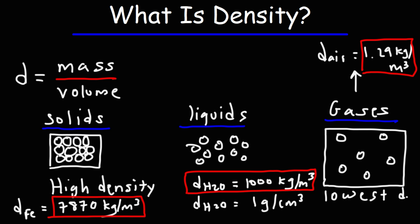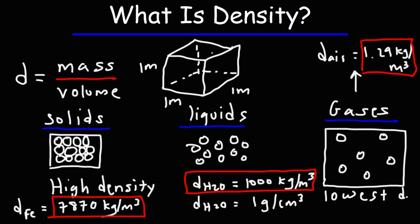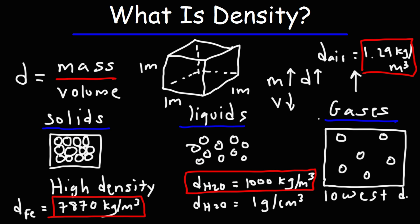So let's think about what this means. If we have a cube that is 1 meter across all sides, it's going to have a volume of 1 cubic meter. If this cube had only air, the amount of mass inside would be 1.29 kilograms. If we filled the cube with water, there would be 1,000 kilograms of water in that cube. If that cube was made up of solid iron, there would be 7,870 kilograms of matter in that cube. So if you can increase the mass within a fixed space, the density is going to increase. If you keep the mass the same but decrease the volume, the density will also increase.